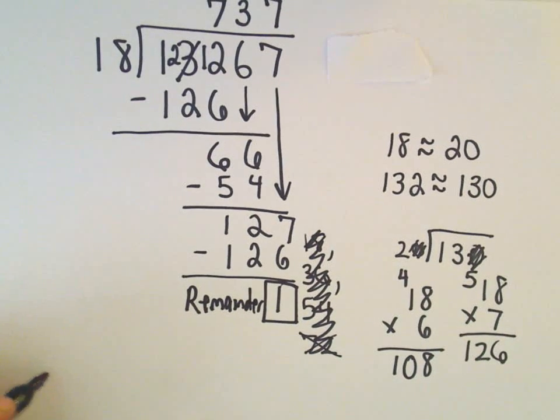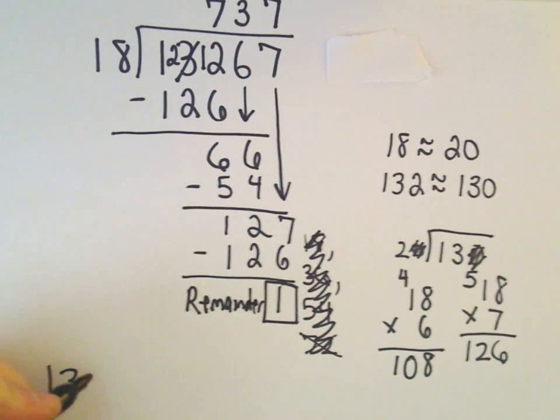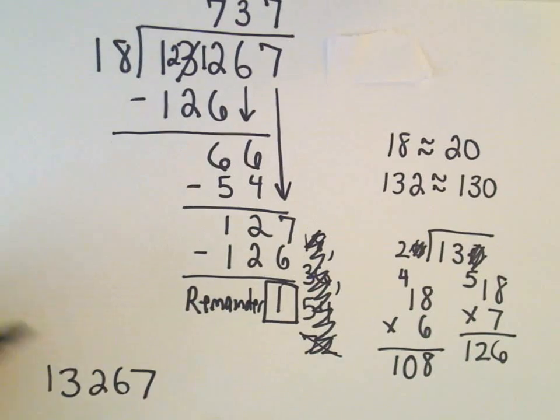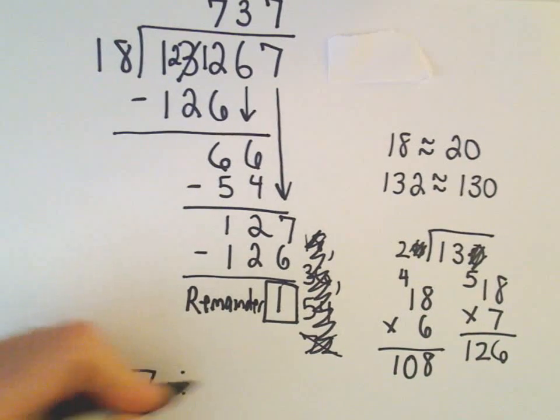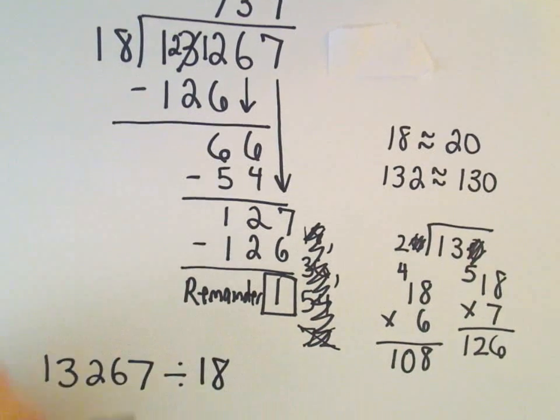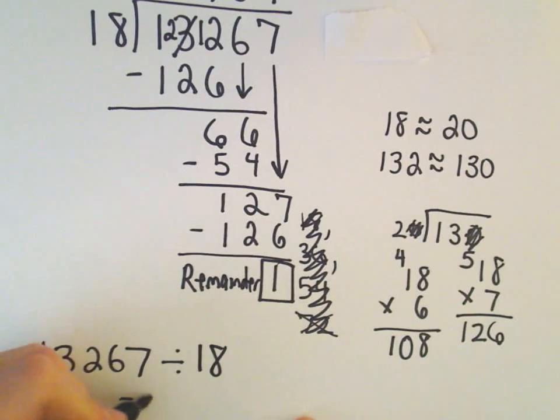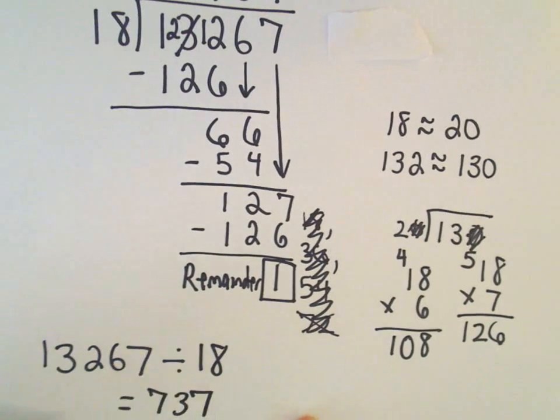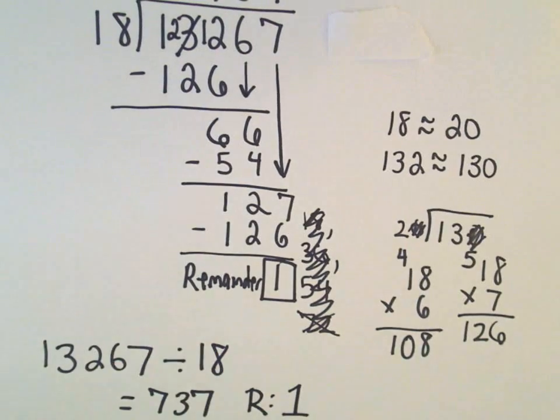So it says if we do, what was our number? 1, 3, 2, 6, 7. If we divide that by 18, it says we're going to get 7, 3, 7 with a remainder of 1.